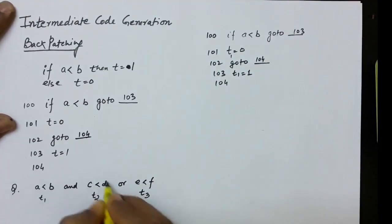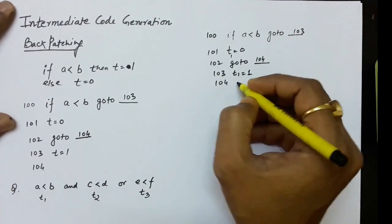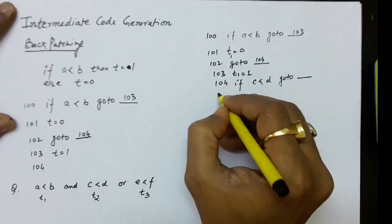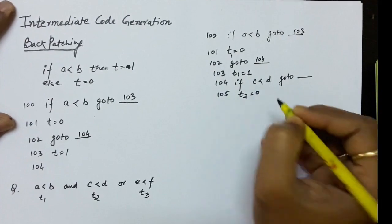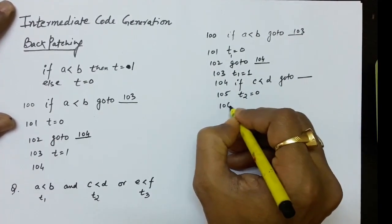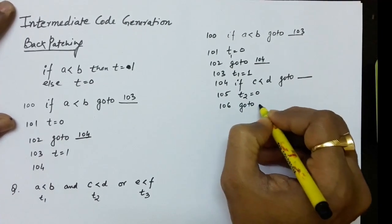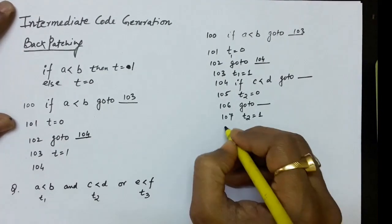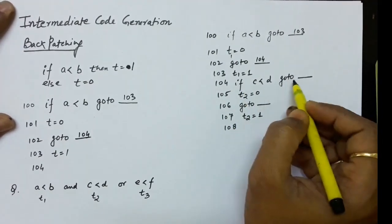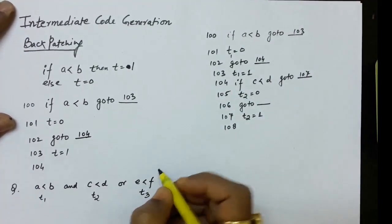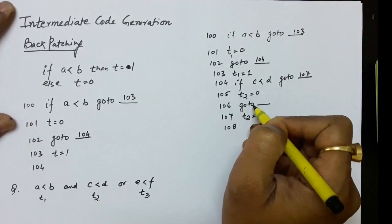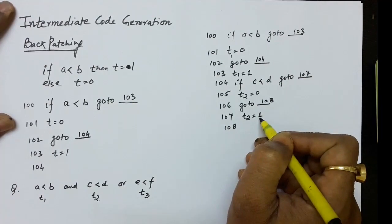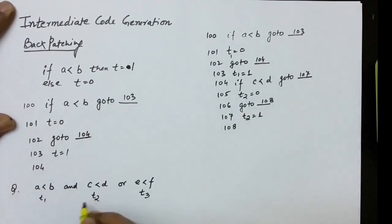Similarly for c less than d, starting at label 104: if c<d goto (blank). The false part at label 105: t2 equals 0, then unconditional jump (blank). At label 107: t2 equals 1, and label 108 follows. If c<d is true we go to 107 to set t2=1; if false we fall to 105 setting t2=0, then jump to 108. Backpatching fills in labels 107 and 108.